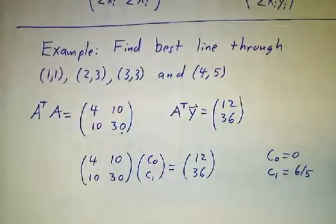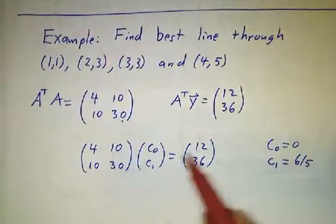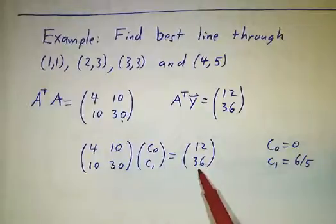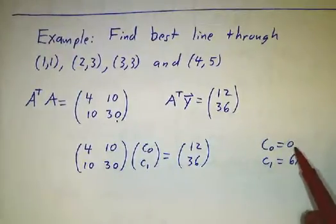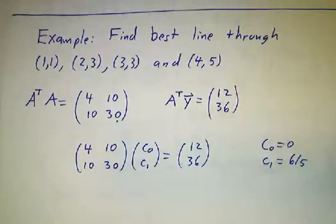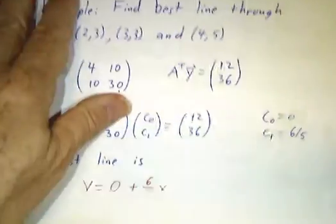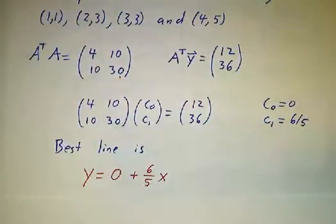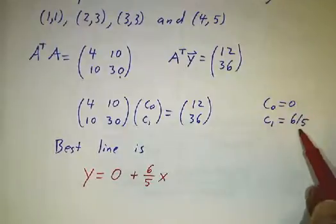So we have to solve the system: [[4, 10], [10, 30]] · (c0, c1) = (12, 36). We've done this before — twice, in fact — and the answer is c0 = 0 and c1 = 6/5. So the best line through those four points is y = (6/5)x.